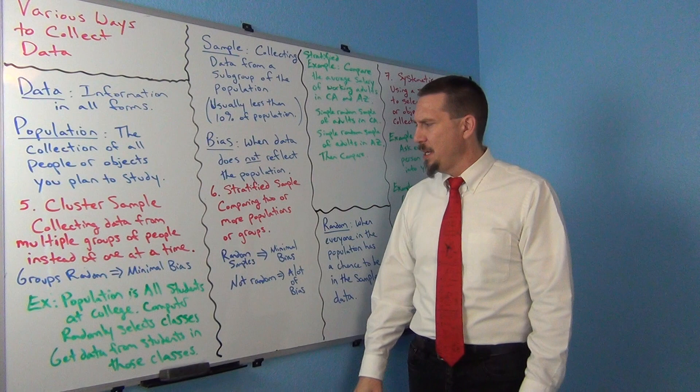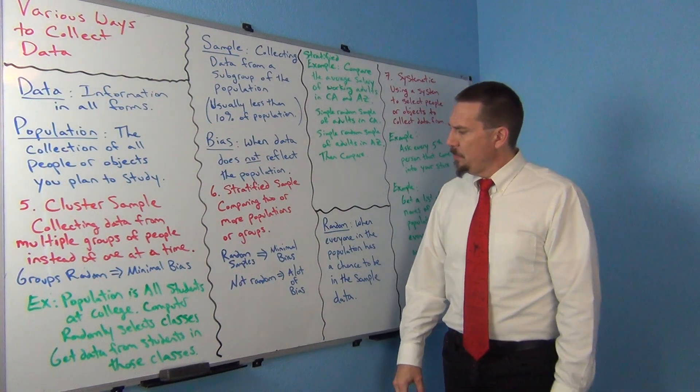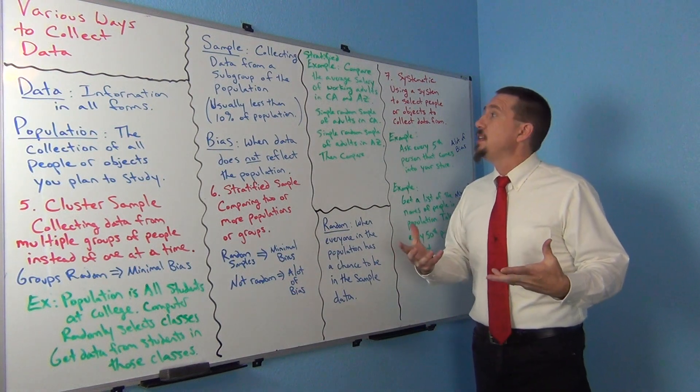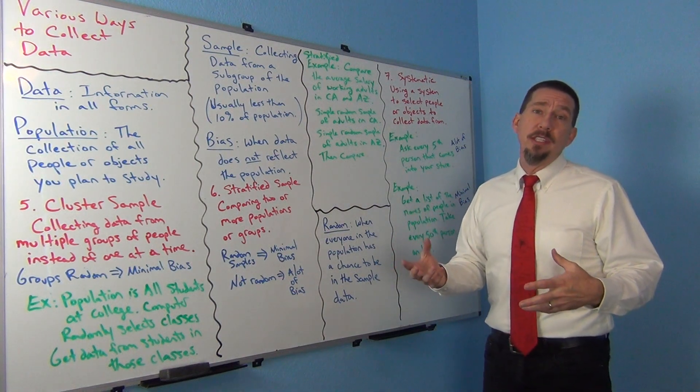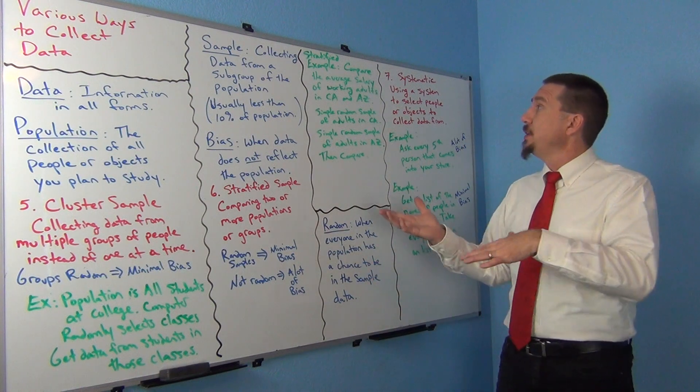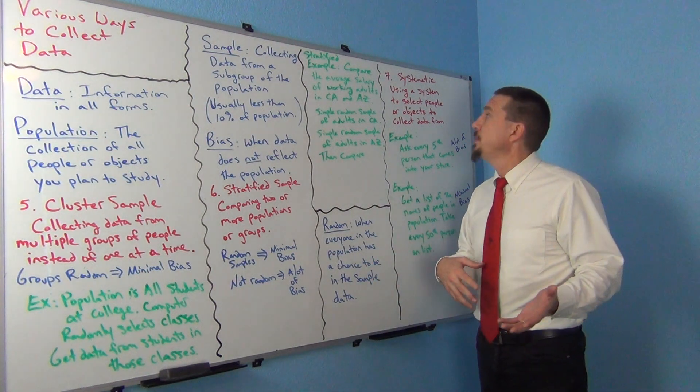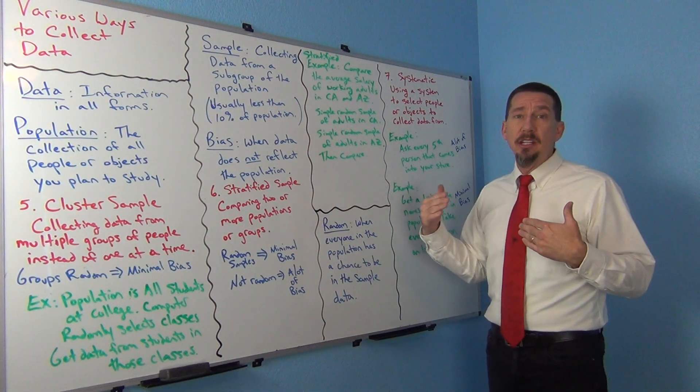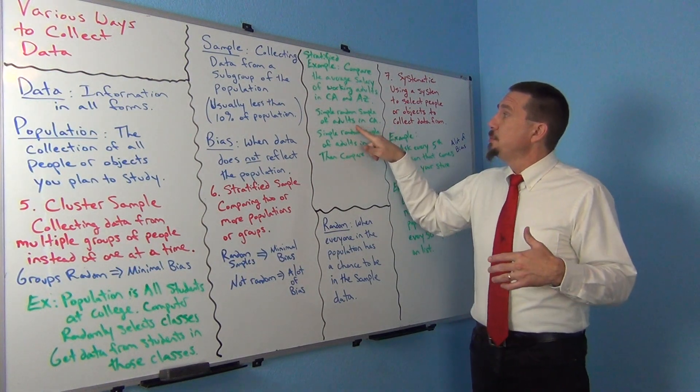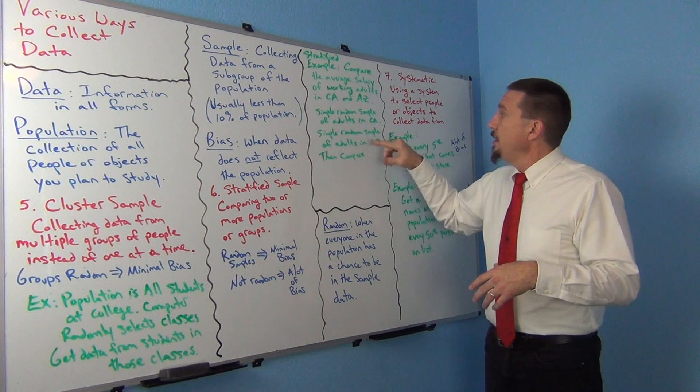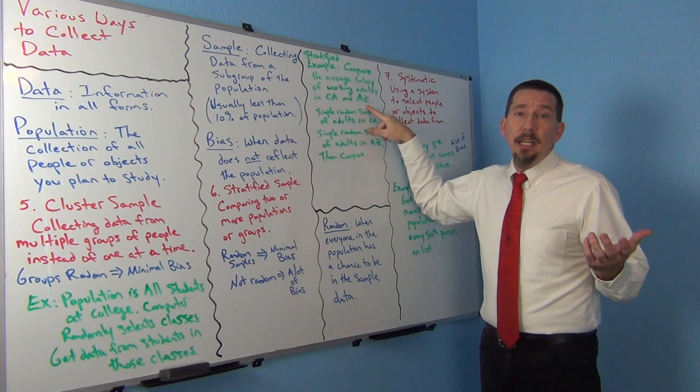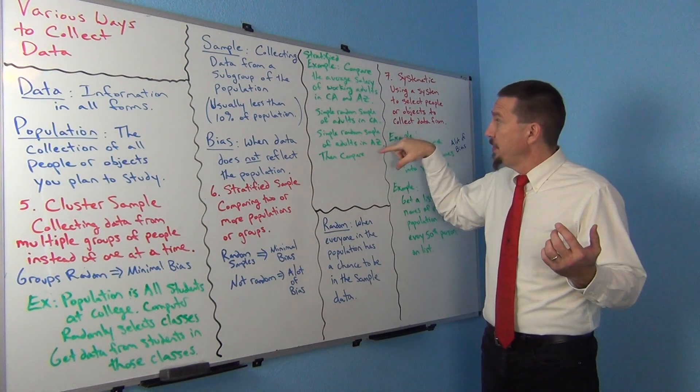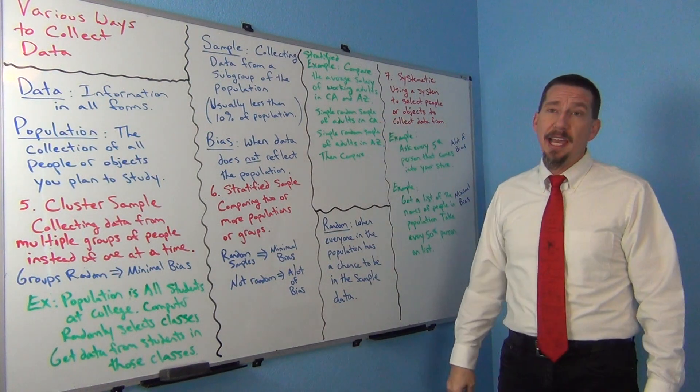So let me give you an example. Suppose I want to compare the average salaries of working adults in California to the average salary of working adults in Arizona. California and Arizona are pretty close to each other and suppose I want to do a comparison study. Well I could just take a simple random sample of people in California and then a simple random sample of people in Arizona and then I could compare them. By the way they don't have to have the same sample size. A lot of people think you have to collect the same exact amount of data, you actually don't.